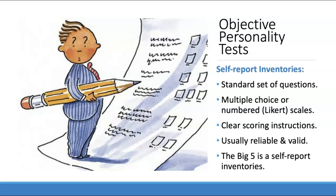More advanced self-report inventories have validity scales that help identify response biases such as lying. For example, an item might say 'I never get angry' — if a person says true to that, they're likely lying, since we all get angry sometimes. There are multiple such items. Inventories also include items to identify whether people are actually reading the questions. For example, if someone answers true to both 'I feel sad all the time' and 'I never feel sad,' they're not reading the items.